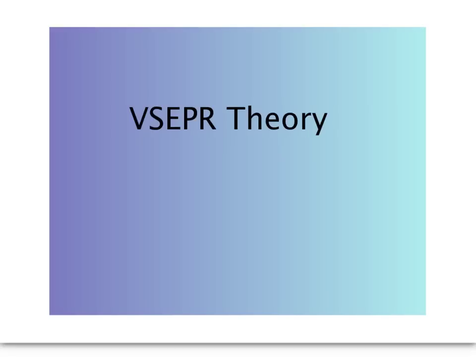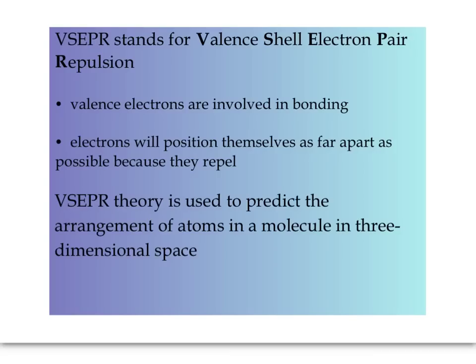In this lesson, we're going to discuss VSEPR theory. VSEPR stands for valence shell electron pair repulsion. It is the pairs of electrons in the outermost energy level, or valence shell, that are involved in bonding.